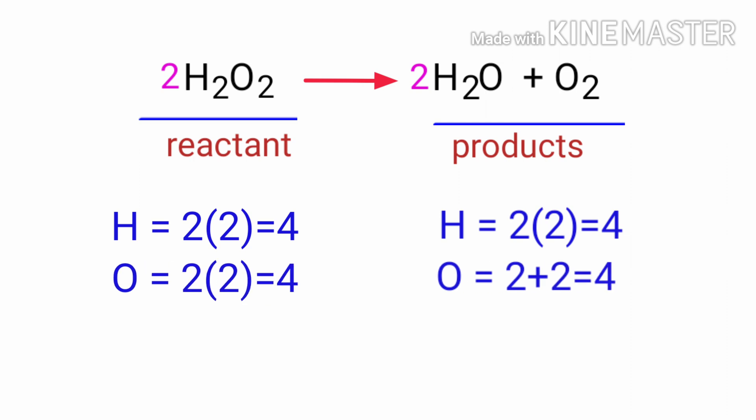The equation is now balanced. There are four hydrogen atoms and four oxygen atoms on both sides.